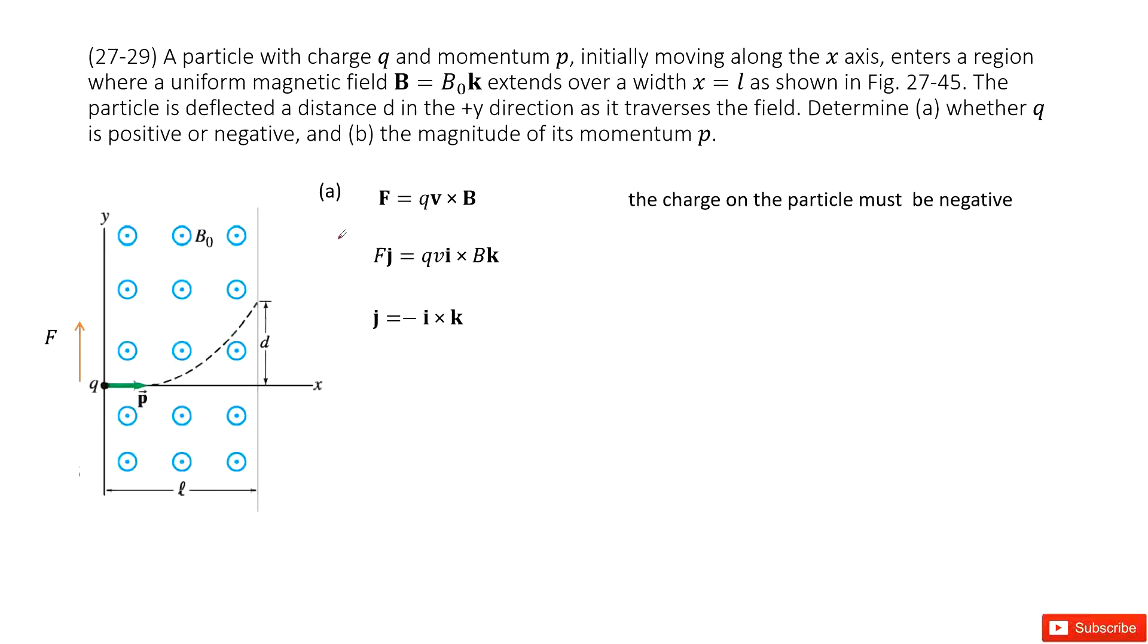And then this force points to the y component. So this is the j component. And we can see the velocity v points to the x component. We can consider it is in the i component. This is q, and then the B is in the k component. We write it there. Now we can see for the vector part, it is just i cross k. It is positive, should equal to j. i cross k should equal to j.